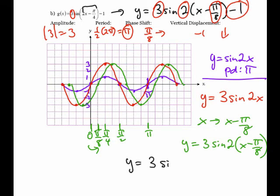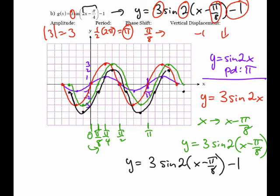And finally, I will deal with the minus 1 at the end, which is a vertical displacement one unit down. I need to take all the points in green and move them one unit down. So there's two complete cycles of my graph and my range. I can see that the graph is ranging between negative 4 there and 2. So y is between negative 4 and 2.